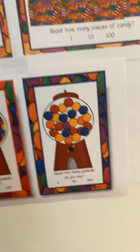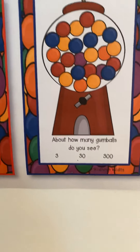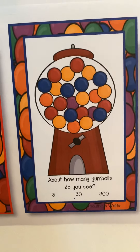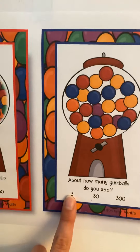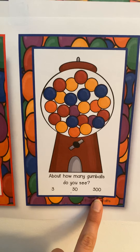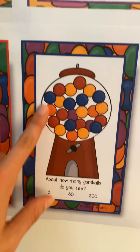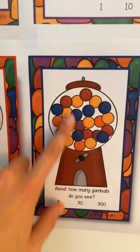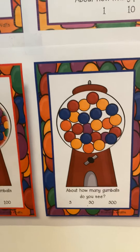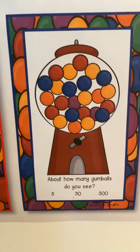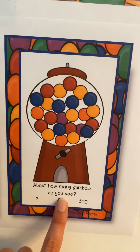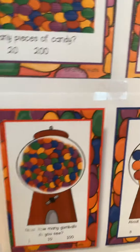Then we have a couple more gumballs to do. About how many gumballs do you see? Three, thirty, or three hundred? I see more than three. Thirty could be right. Three hundred — I can see air bubbles in there, which means they're not even that crowded. So what is going to be the magnitude of this gumball machine — three, thirty, or three hundred? Thirty. Thirty would be the right answer.